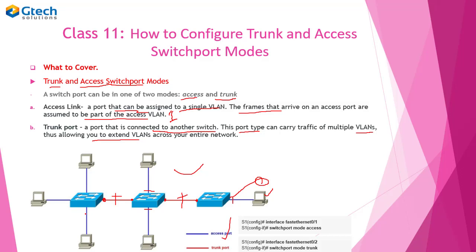Alright, I hope you understand that. A command to configure both access and trunk ports — by default these ports are in access mode. But there comes a time that you must configure them because you want to allocate different devices in different VLANs. So you must specify that this is an access port and this is a trunk port.